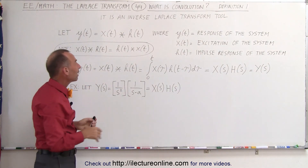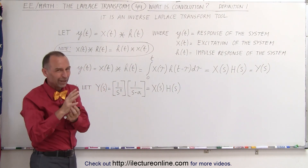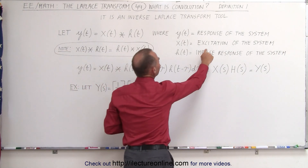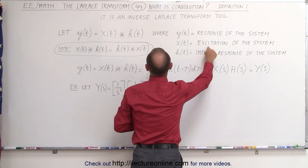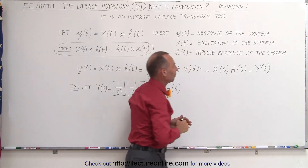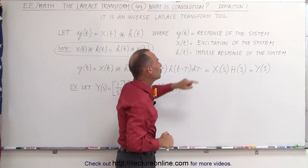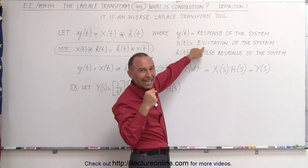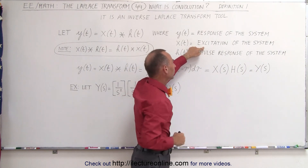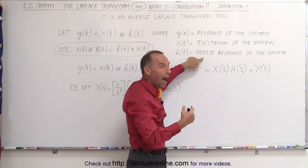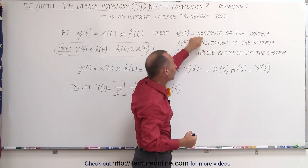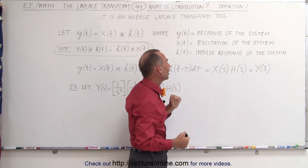To get that, we have to convolve the excitation of the system, which is x, with the impulse response of the system. So what we need is the voltage input or the current input to the system as basically the input, how the system responds to that, and then the output of the system is y of t.